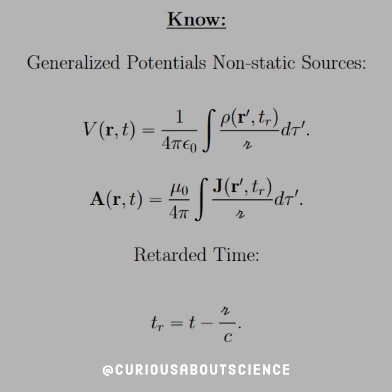So we have a couple new terms that we have to deal with, so let's go over them real quick. The generalized potentials for non-static sources, we have V R of T is equal to 1 over 4 pi epsilon naught, looks all the same as what we had before, except now we have it evaluated at TR, which is known as the retarded time.